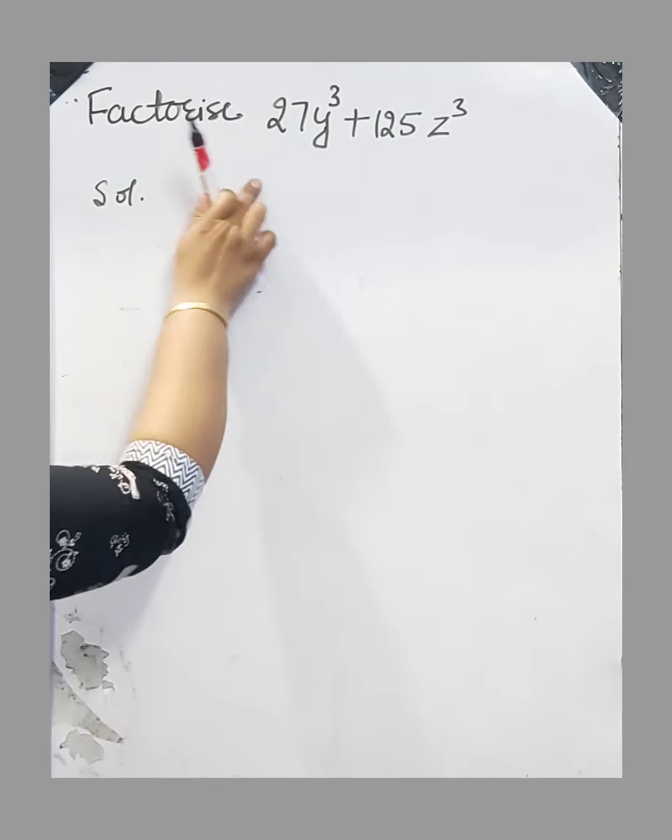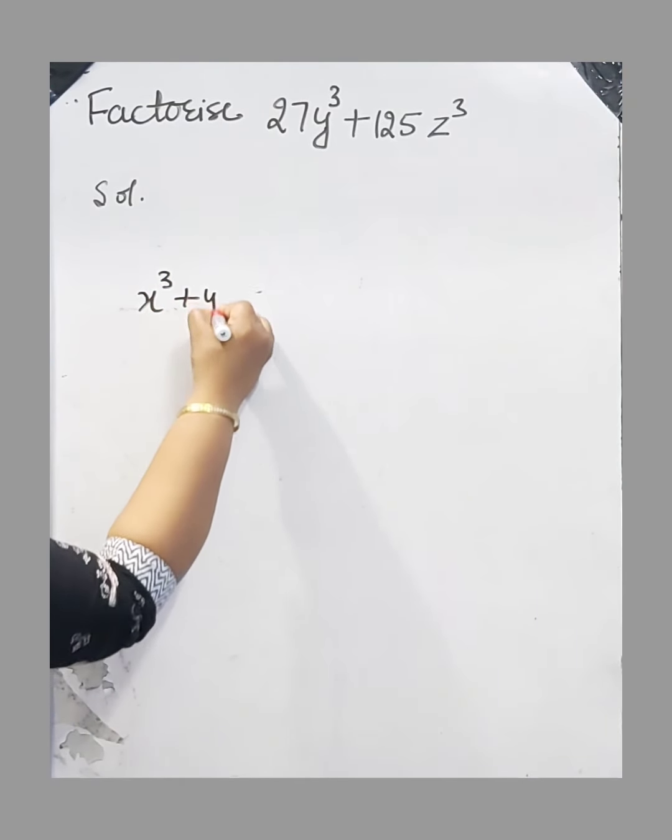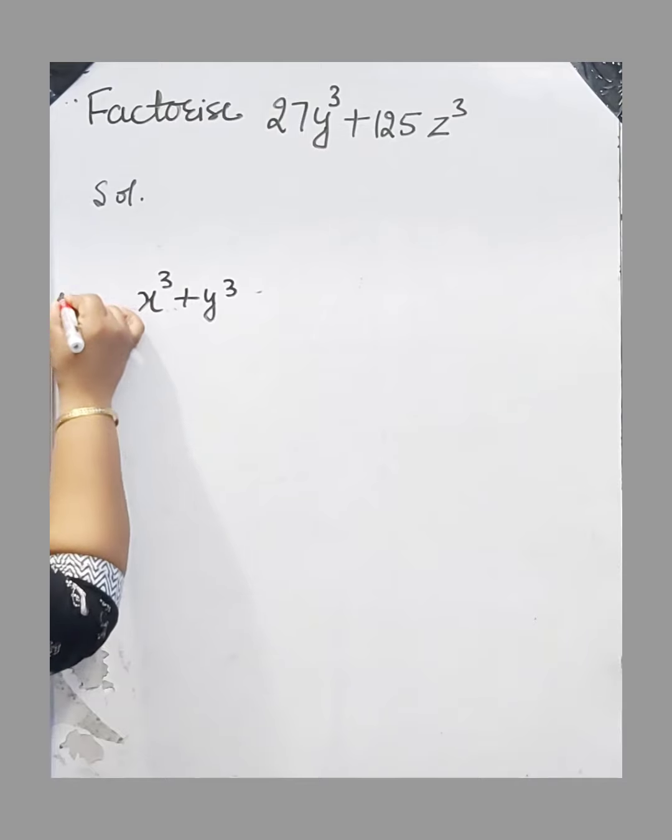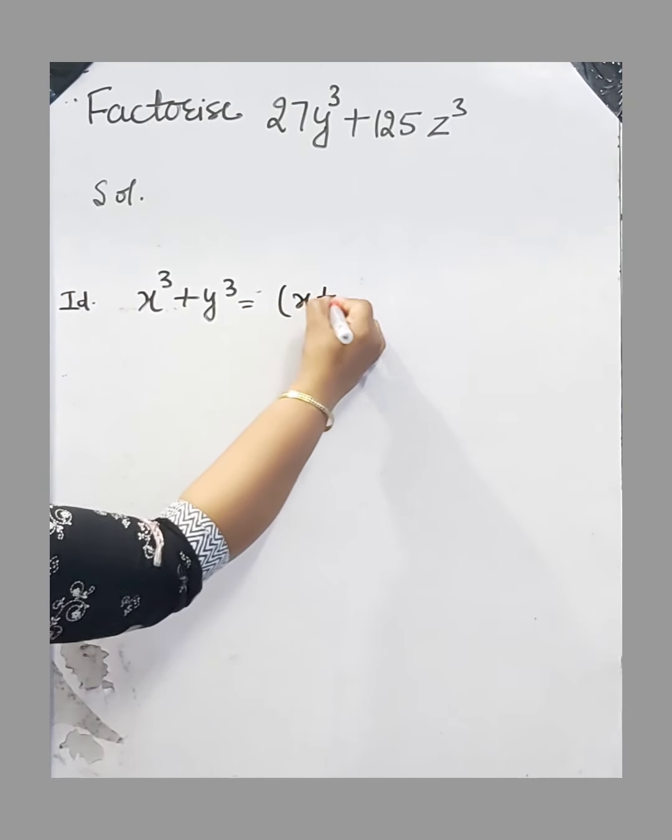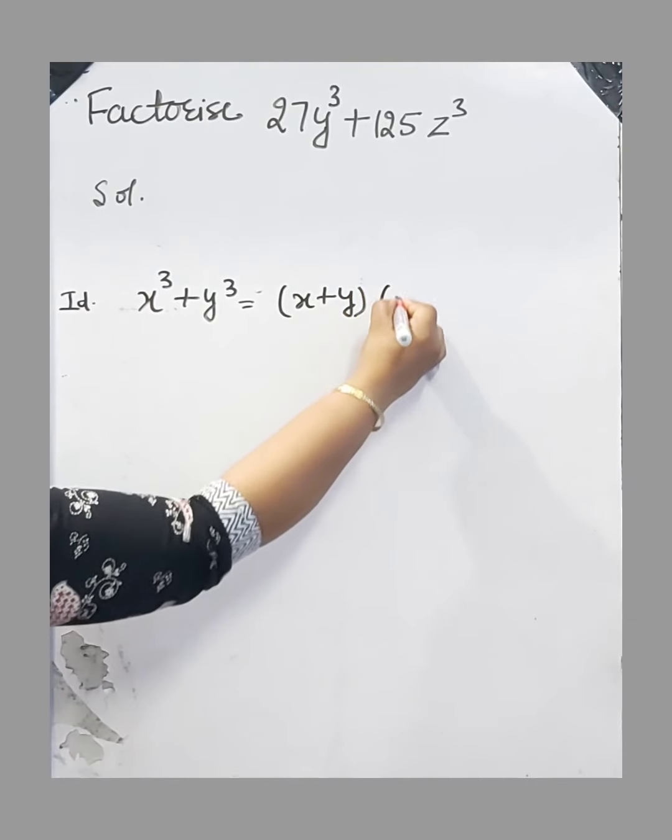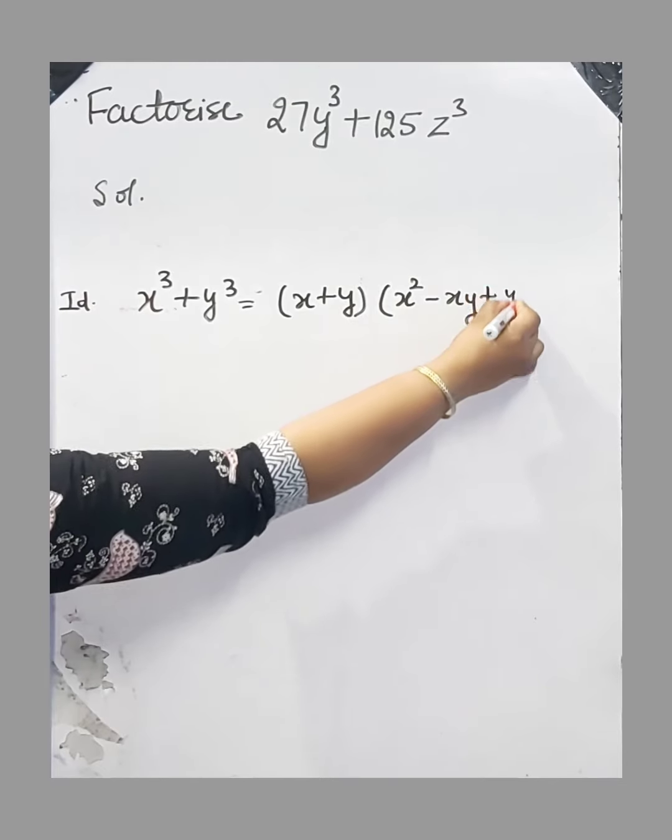We will solve this question by using the identity x³ + y³ = (x + y)(x² - xy + y²).